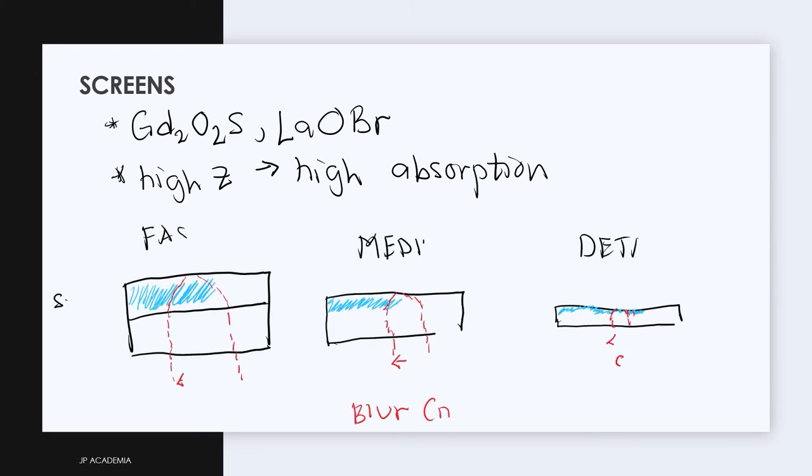The thickness of the screen affects the image blur. Thick screens absorb a large fraction of photons but produce large spread of photons that degrades the spatial resolution shown in this length a here.